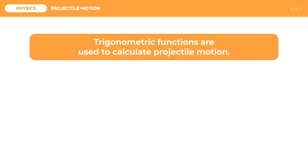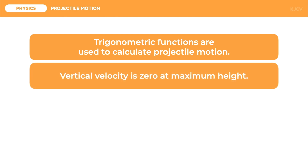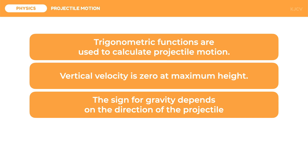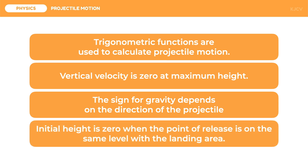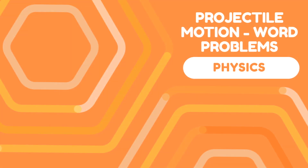Let us now review the key points. First, trigonometric functions are used to calculate projectile motion. Second, vertical velocity is zero at maximum height. Third, the sign for gravity depends on the direction of the projectile. And lastly, initial height is zero when the point of release is on the same level with the landing area. That ends our discussion on word problems on projectile motion.